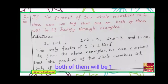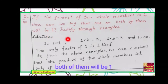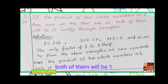Problem number 3: If the product of 2 whole numbers is 1, can we say that 1 or both of them will be 1? Justify through examples. Since whole numbers include 0, we could choose 0, but the product must be 1. When you multiply any number by 0 you get 0 only — you will never get 1. So 0 cannot be one of the two whole numbers.